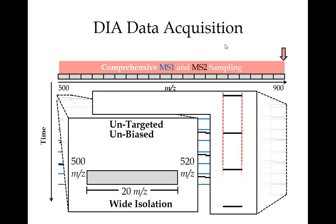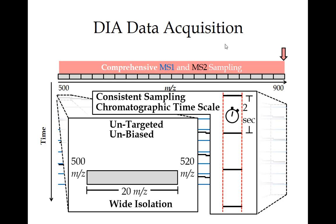A really important aspect of DIA is consistent sampling. This MS/MS window is the exact same in every scan, which means we're able to extract chromatograms from the data. In our lab, we make this cycle happen about every two seconds, based on the chromatography system. Just like any other targeting method — SRM or PRM — you need to sample fast enough to get enough points on your chromatographic peak for good quantification. We aim for about seven points across the peak, which means with a two-second cycle time, the minimum peak width for decent quantification is about 15 seconds.